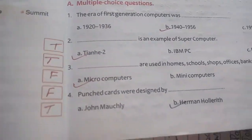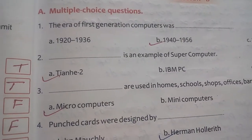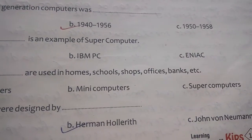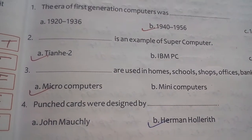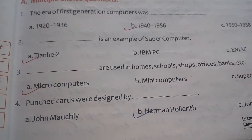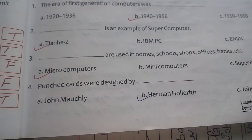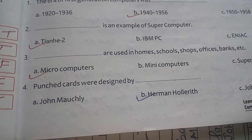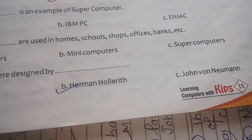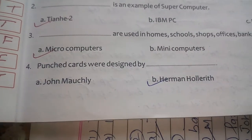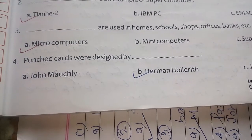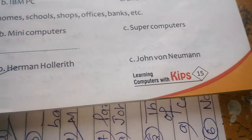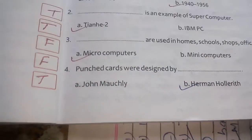Now MCQ. The era of the first-generation computer was 1940 to 1956. An example of a supercomputer is TITAN-2. A computer used at home, school, shop, office, and bank is a microcomputer. And the punch card was designed by Herman Hollerith. The answer to this question is Herman Hollerith.